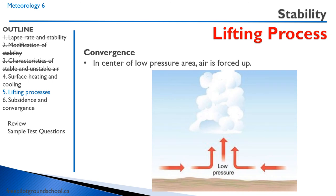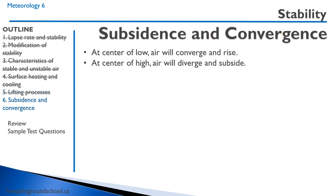In the center of a low pressure area, we have convergence. Air goes from high to low, so from the surrounding areas towards the center of the low. Once it reaches the center, it cannot go anywhere other than up — it is forced upward, expands, cools, reaches its dew point, and clouds form. At the center of a low, air converges and rises; at the center of a high, the air diverges and subsides, or goes down.